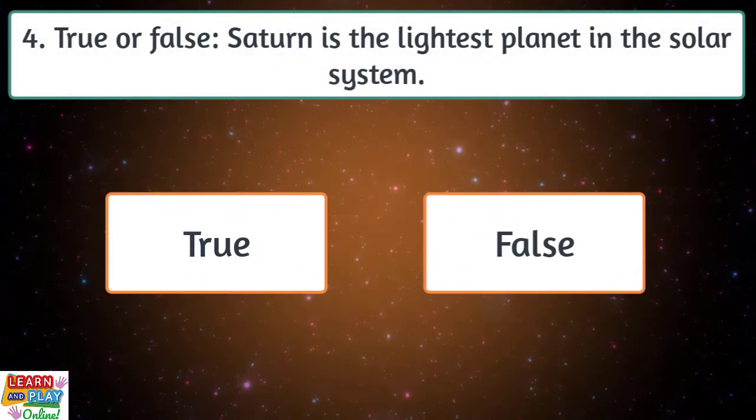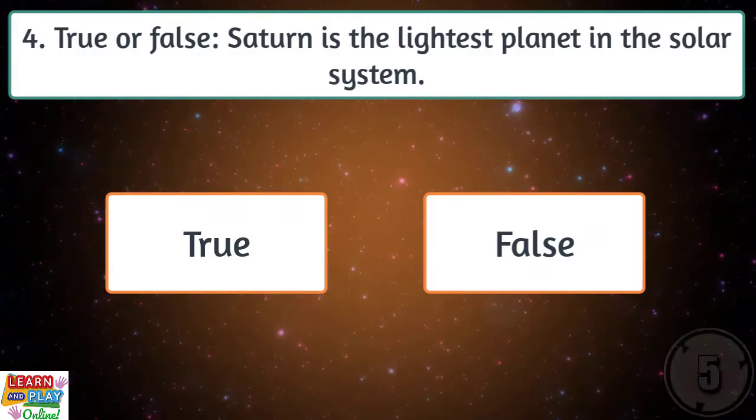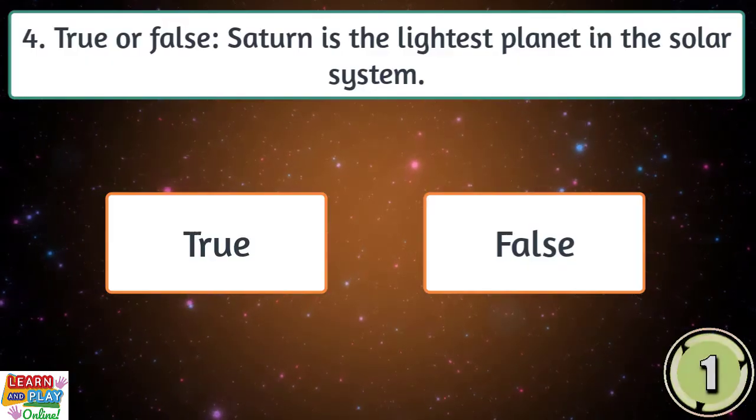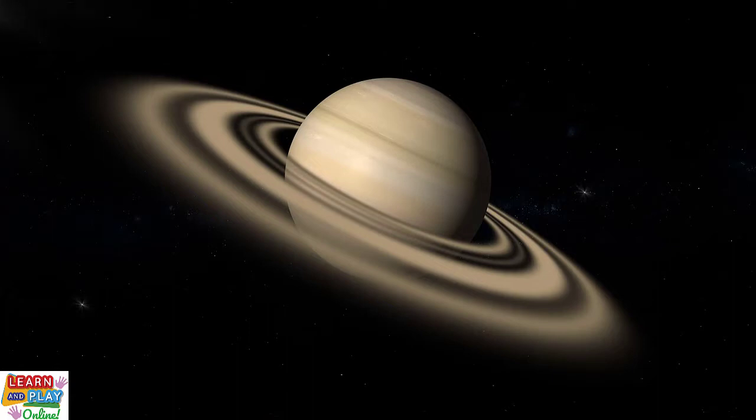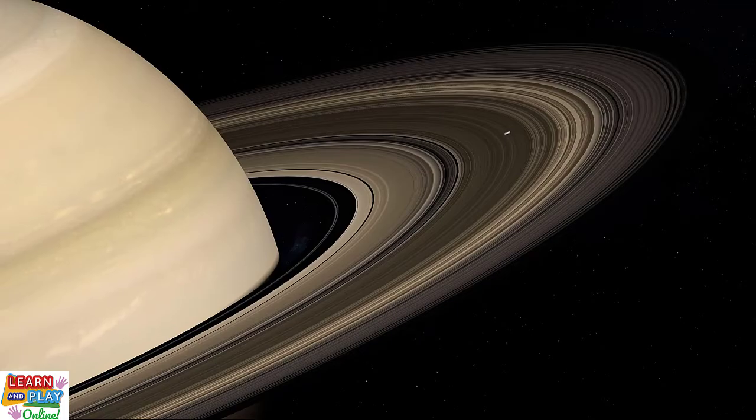Question 4. True or false, Saturn is the lightest planet in the solar system? Although it is the 2nd largest planet, it is actually the lightest. As it is a gas giant, it is made up of mainly hydrogen and helium. Its gaseous structure makes it less dense than water, which means that if you had a water surface to put it on, it would actually float.